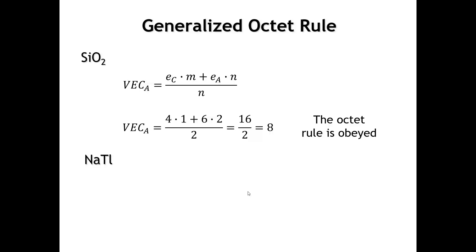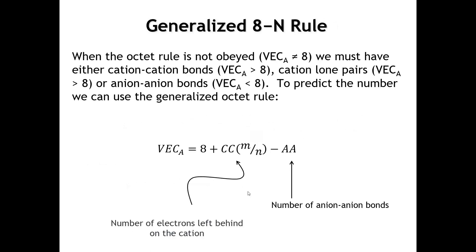Let's do another example and see what might happen when the valence electron count per anion is not eight. So, sodium-thallide. Well, here's our formula. Sodium has one valence electron. Thallium has three. And so, our valence electron count is four electrons per thallium. We can think of the sodium giving up its one valence electron to thallium. And it now has four valence electrons. Well, four is not eight. So, we're not obeying the octet rule. So, what does that mean?